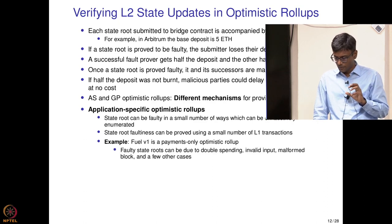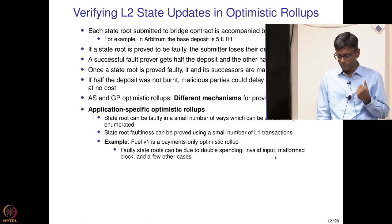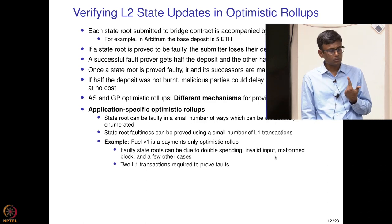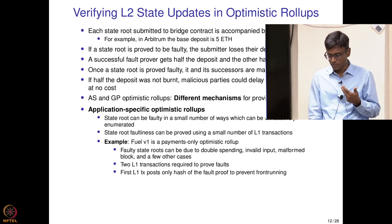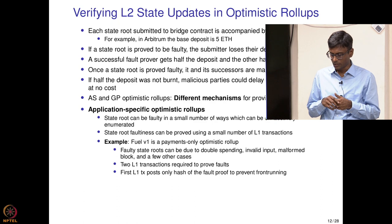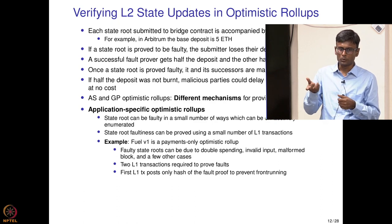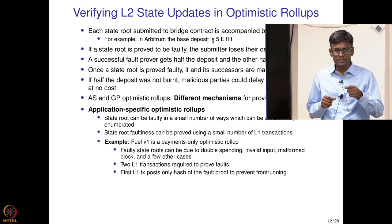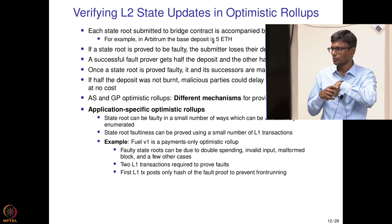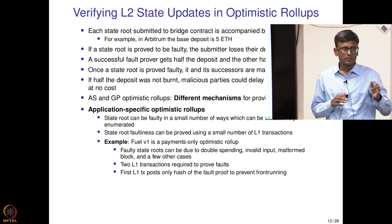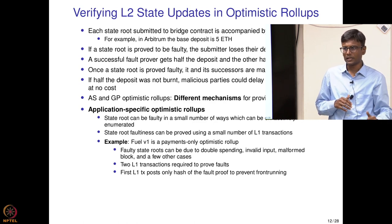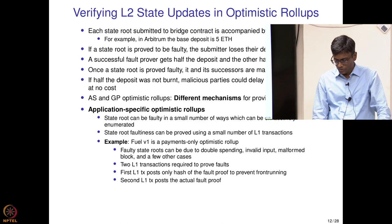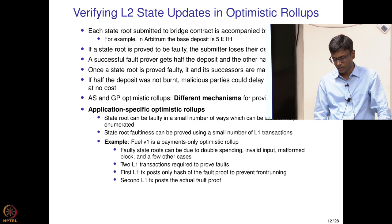Since the faults are finite — such as double spending, invalid input, malformed block — only 2 L1 transactions are enough to prove faults. The first transaction posts a hash of the fault proof to prevent front running. Front running means someone pays higher fees and resubmits the same fault proof to take the reward. The second L1 transaction posts the actual fault proof. So in application-specific optimistic rollups a small number of transactions are enough to prove faults.